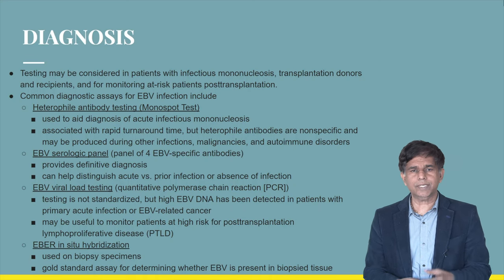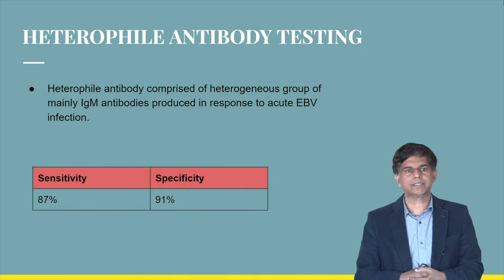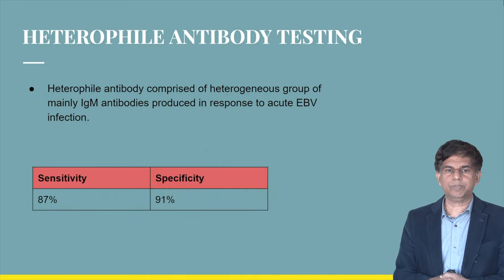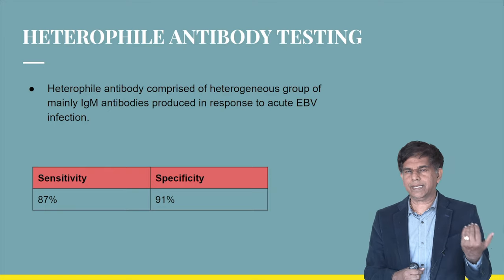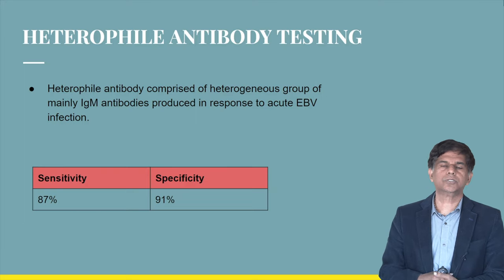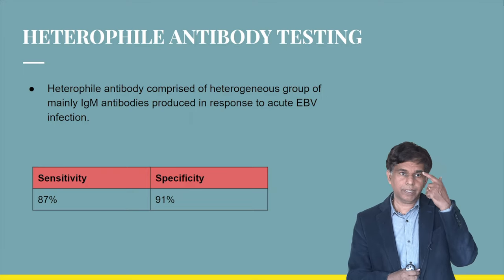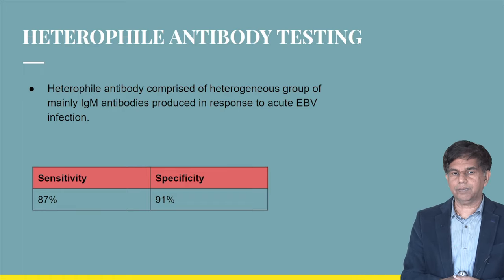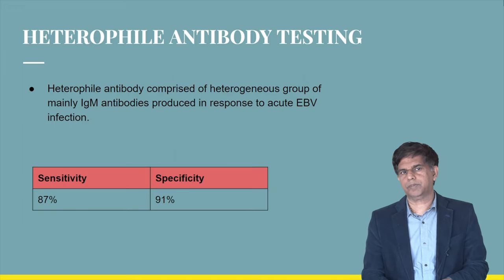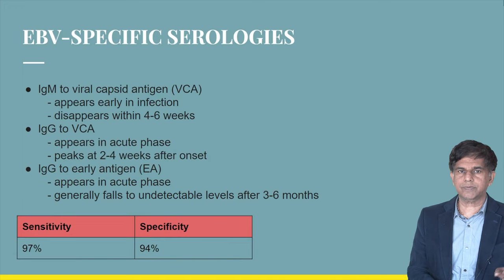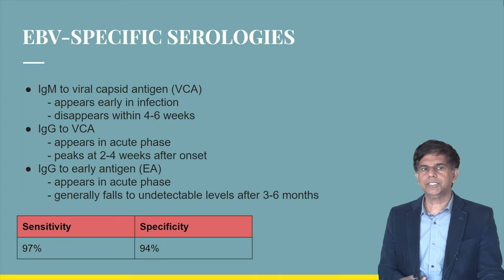The heterophile antibody test has a sensitivity of around 87% and specificity of 91%. Heterophile antibodies are a heterogeneous group of mainly IgM antibodies produced in response to acute EBV infection. Note that these are IgM antibodies, and the sensitivity and specificity are quite high. EBV-specific serologies include IgM to viral capsid antigen (VCA), IgG to VCA, and IgG to early antigen.